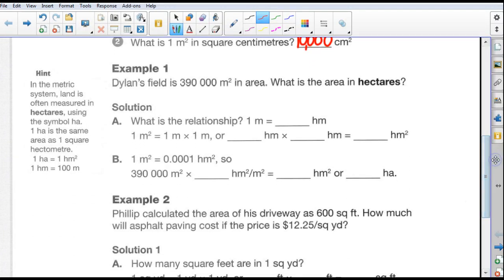Example number one. Before we do example number one, let's just look to the hint on the left-hand column here. In the metric system, land is often measured in hectares using the symbol HA. One hectare is the same area as one square hectometer. One hectometer is one hectometer squared. And one hectometer, this is the important thing, is 100 meters. One hectometer is 100 meters. Okay, so taking that information, let's do example number one.